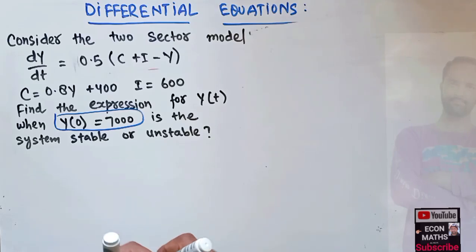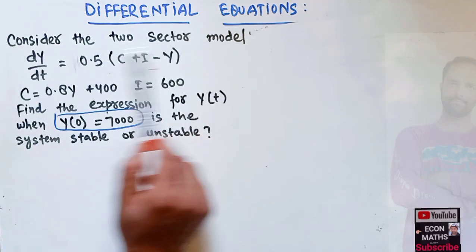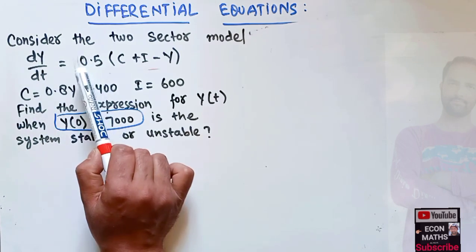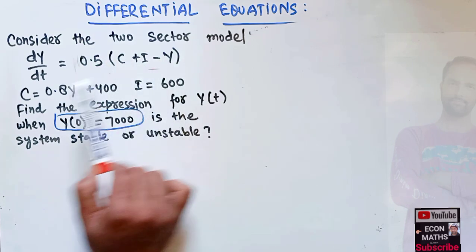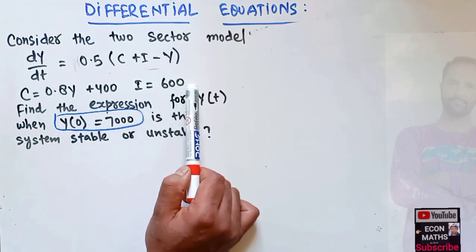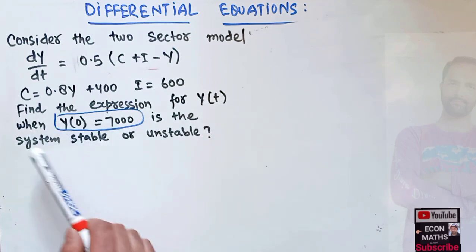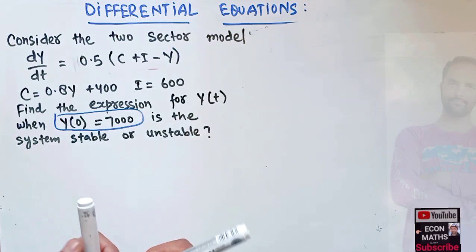In this video we will learn about the economic applications of differential equations. This is probably the sixth video on differential equations. The question is: consider the two-sector model, where the change in income with respect to time is a positive linear function. Consumption function is c = 0.8y + 400, investment is 600, and the initial condition is y(0) = 7000. We have to find the expression for y(t) and determine whether the system is stable.